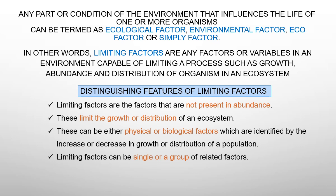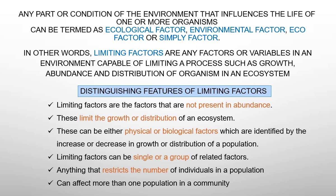There can be many different limiting factors at work in a single habitat, and the same limiting factor can affect the population of both plant and animal species. Anything that restricts the number of individuals in a population is termed a limiting factor. They can affect more than one population in a community. Ultimately, a limiting factor determines a habitat's carrying capacity, which is the maximum size of the population it can support.